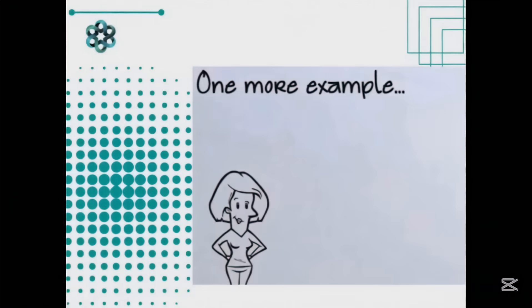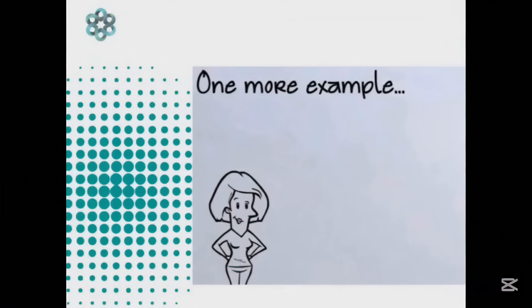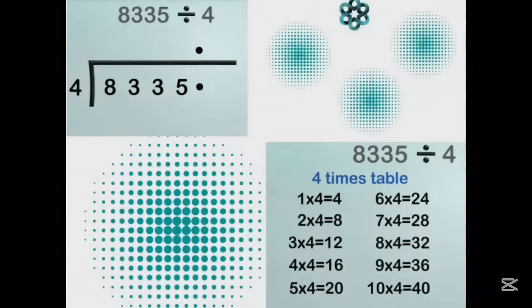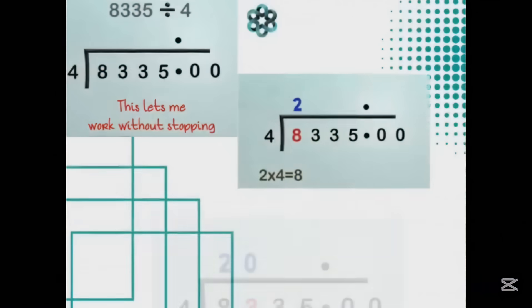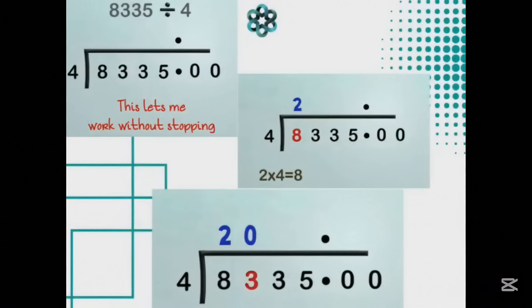One more example to make sure you have got it: 8,335 divided by 4. Thinking about this problem before we even start — I know that nothing in the 4 times table ends in 5, so this dividend will give me a remainder. So I get ready for it now. I put in a decimal point in my dividend and on the answer line and then write my zeros.